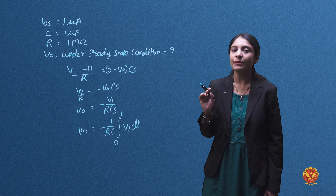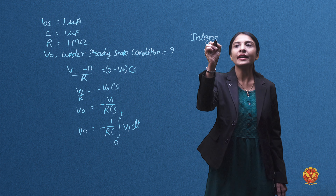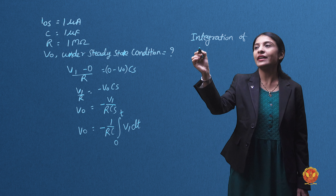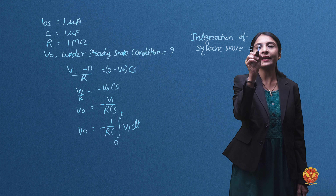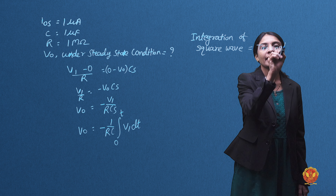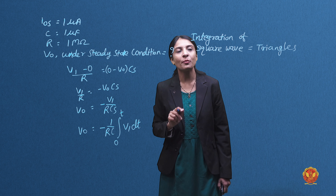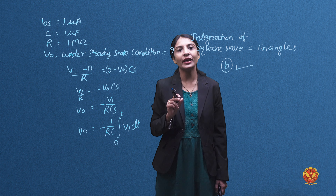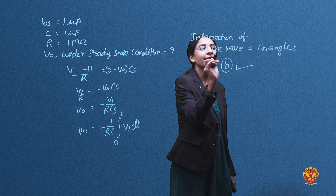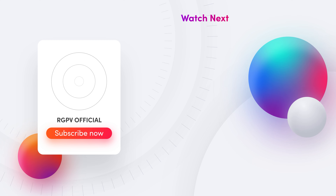The integration of a square wave results in a triangular wave. If we take the integration of a square wave, we get a triangular waveform. Therefore, Option B is the correct answer — a triangular wave of 1 volt peak to peak. Since we are integrating the square wave, we get a triangular wave, so Option B is our correct answer.